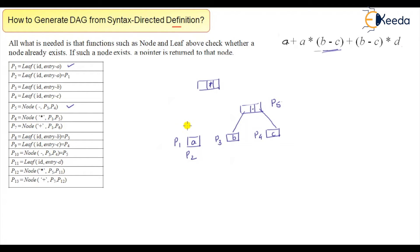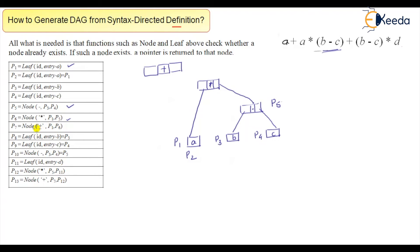Next, we create a star node. This star node has pointers towards p1 and p5, so p1 and p5 are its two children. Then we have another node with plus, with two pointer values p1 and p6. This new star node is assigned to p6.